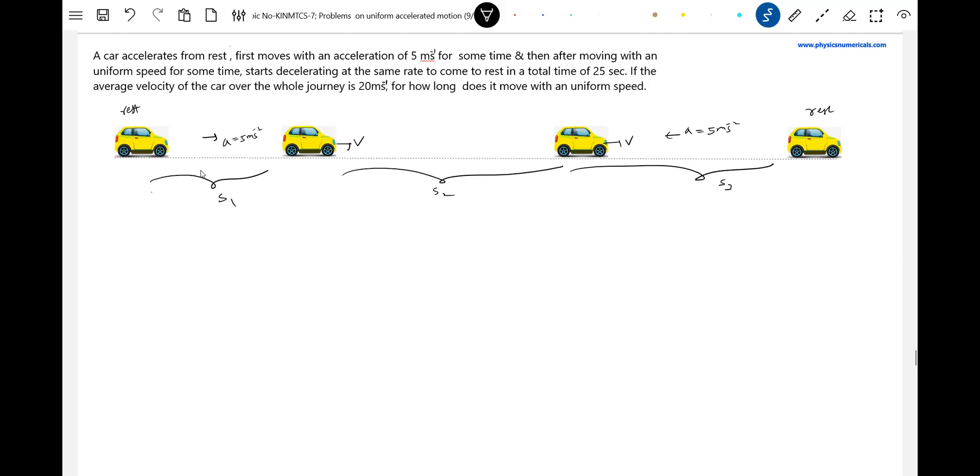Since S1 must equal S3, I can show that. V squared equals 2AS1, or V squared minus 0 squared equals 2AS1. This is for uniformly accelerated motion.